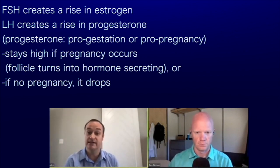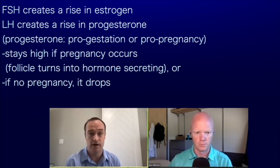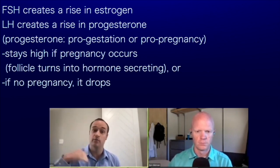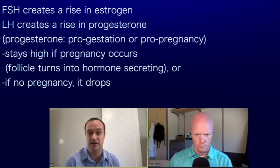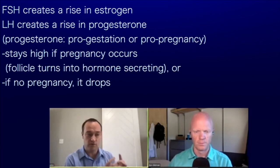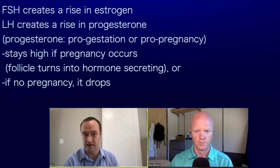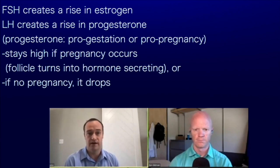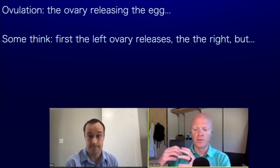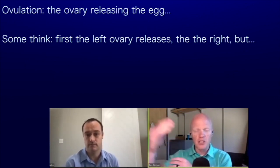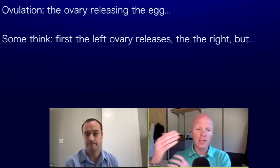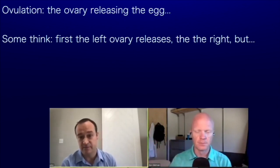That progesterone either stays high — meaning pro-gestation or pro-pregnancy — if a woman is pregnant, and the follicle turns into the hormone-secreting portion of the pregnancy. Or if that doesn't happen and the person doesn't get pregnant, then that progesterone drops. The word ovulation refers to the ovary actually releasing the egg — it's a fascinating process.